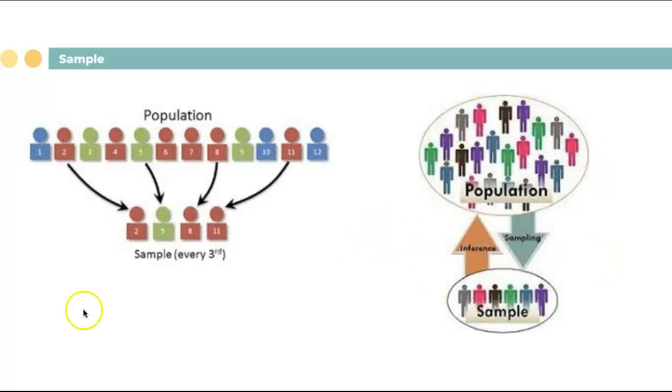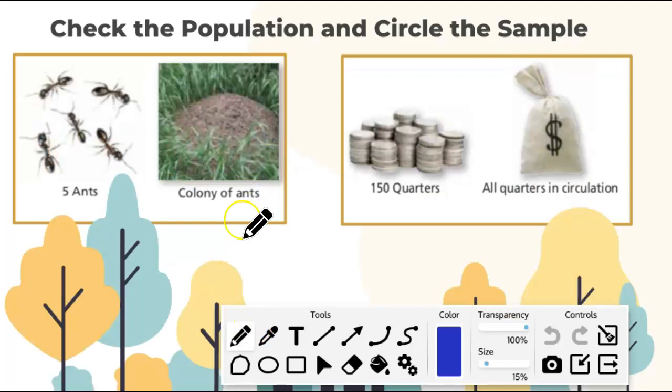Let's say each department will be a good example of a sample. Not just you're going to say, oh, sixth grade only, or seventh grade. No, you have to take at least a sample of each group. So let's see an example. Check the population and circle the sample. So in the first example, you have, what is the population? So definitely the colony of the ants is our population, and that group of a small group, the ants, is our sample.